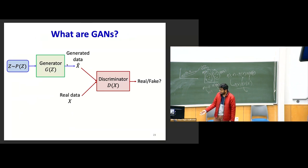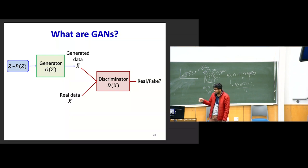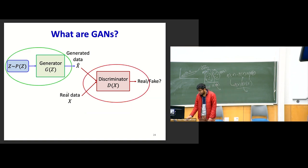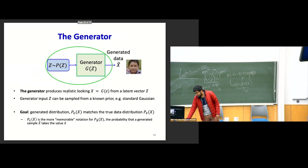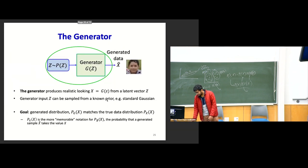The basic structure of GANs: you take a latent variable Z, pass it through the generator, and the generator produces fake data. You also have a real data distribution and take data points from it. The discriminator tries to classify the generated data as fake and the real data as real. The aim of the generator is that its generated data should be classified as real by the discriminator — that's the whole goal.